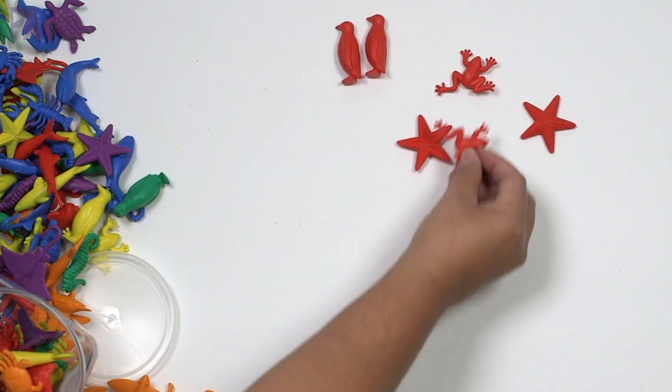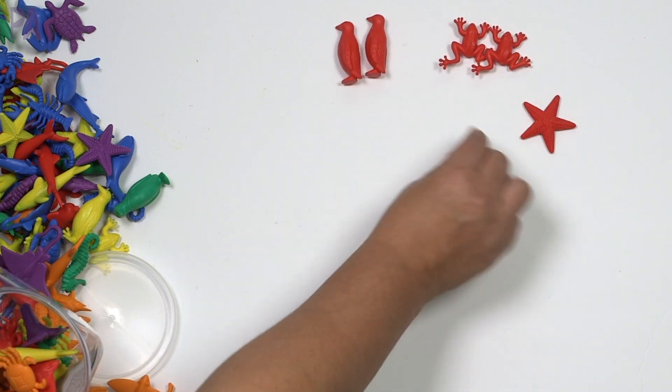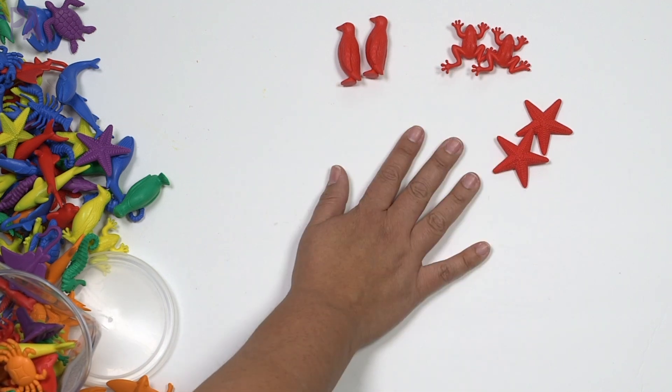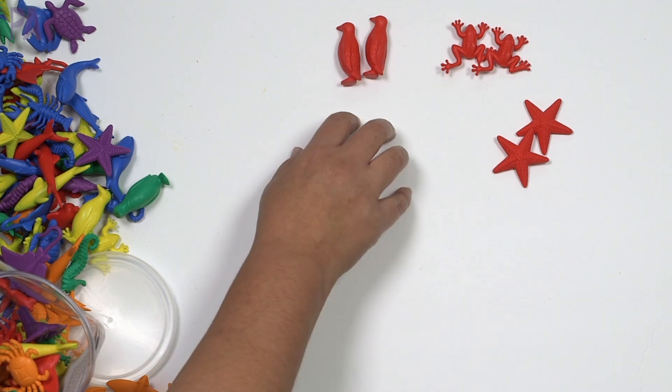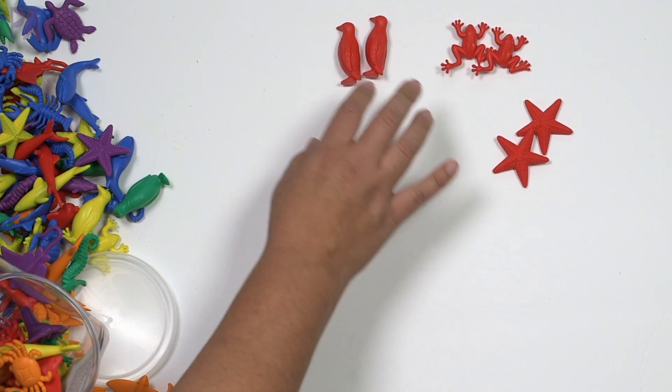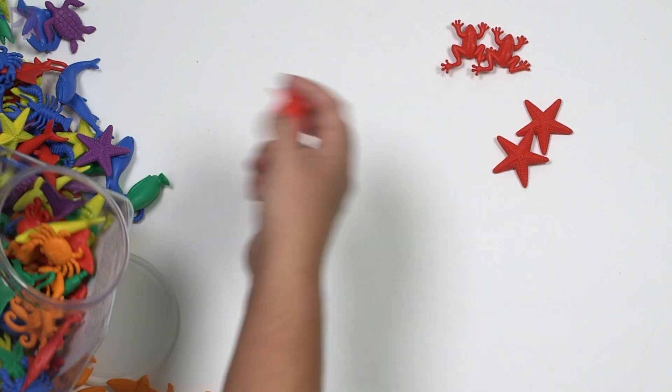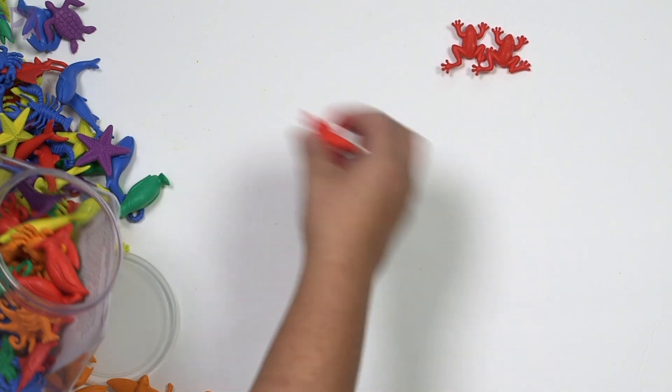As your child gets more skilled and able to do this task, then you can add in more. And you can even add in more colors. If you don't have a set like this, that's fine. Look for what you have around your house. You can do cars versus stuffed animals. You can do Legos versus crayons. Whatever items you have, you can find around the house to do this exact same activity.